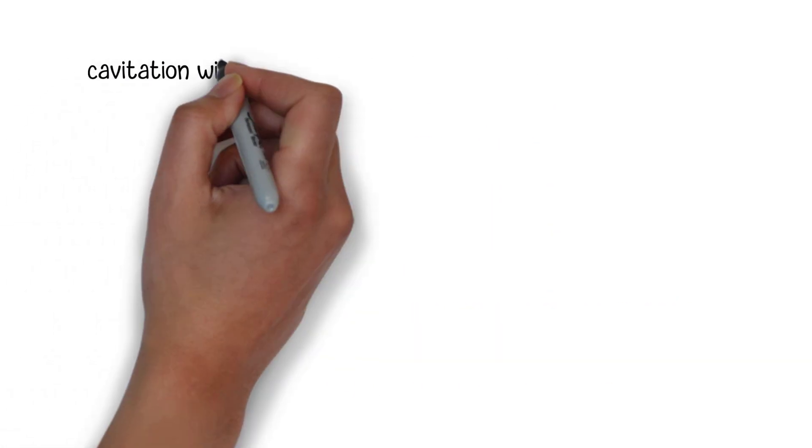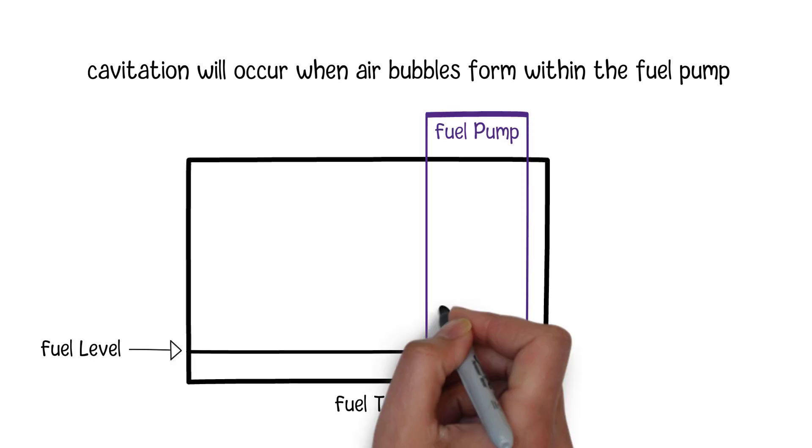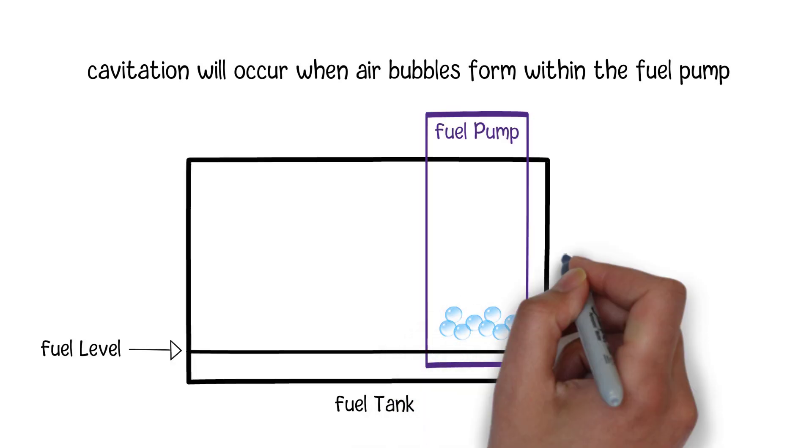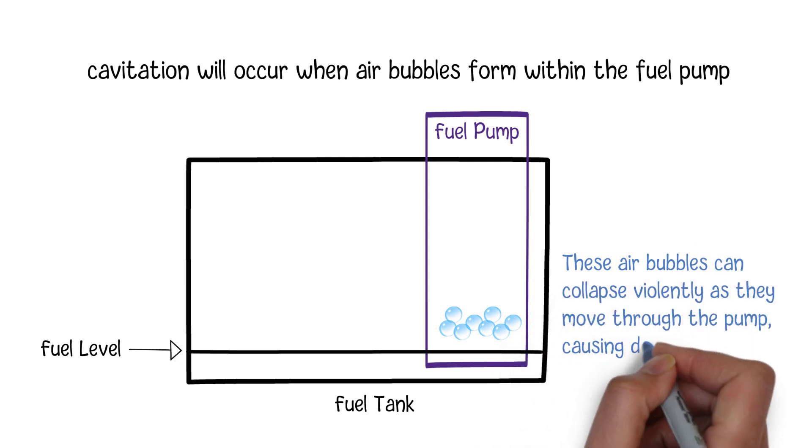Moreover, cavitation will occur when air bubbles form within the fuel pump due to low fuel levels or insufficient fuel supply. These air bubbles can collapse violently as they move through the pump, causing damage to its internal surfaces. Cavitation can lead to erosion of the pump's components, including the impeller blades and housing, which can ultimately reduce the pump's efficiency and lifespan.